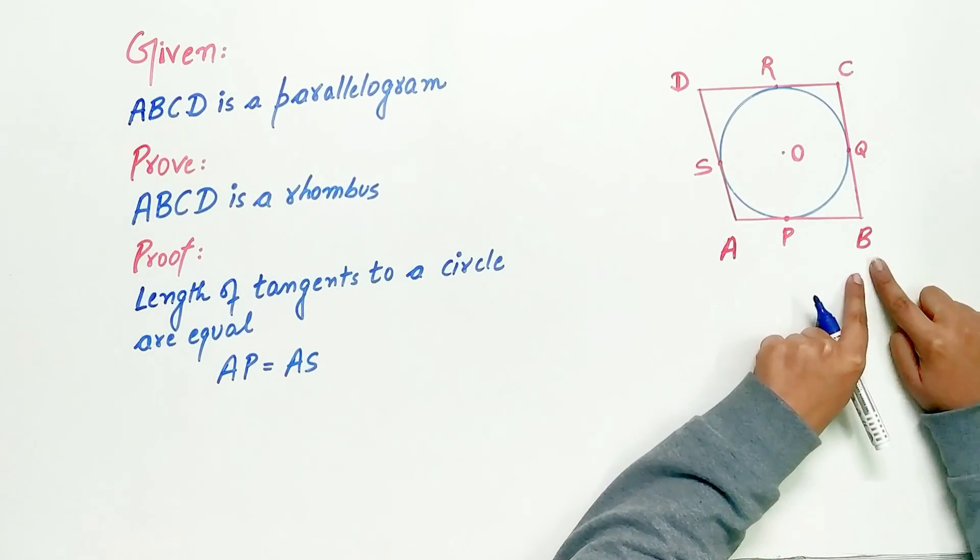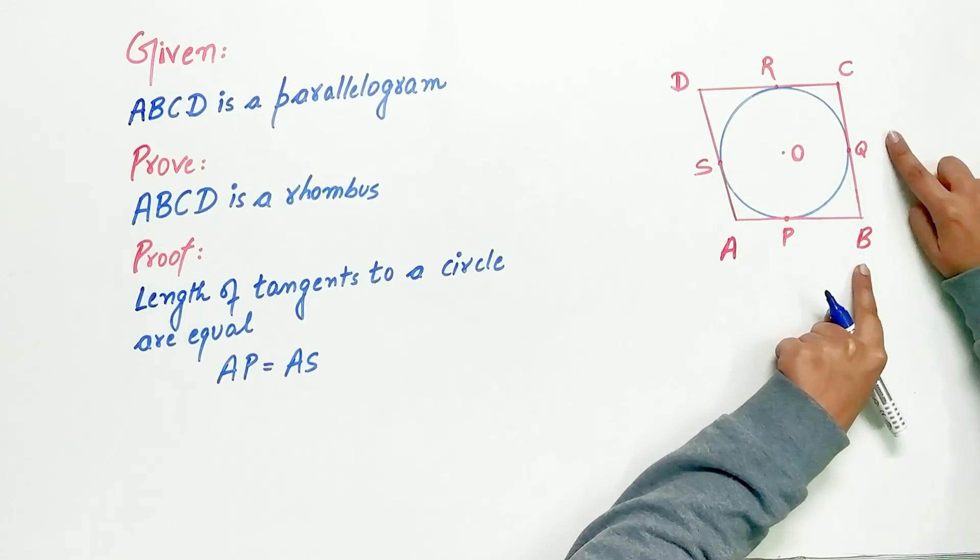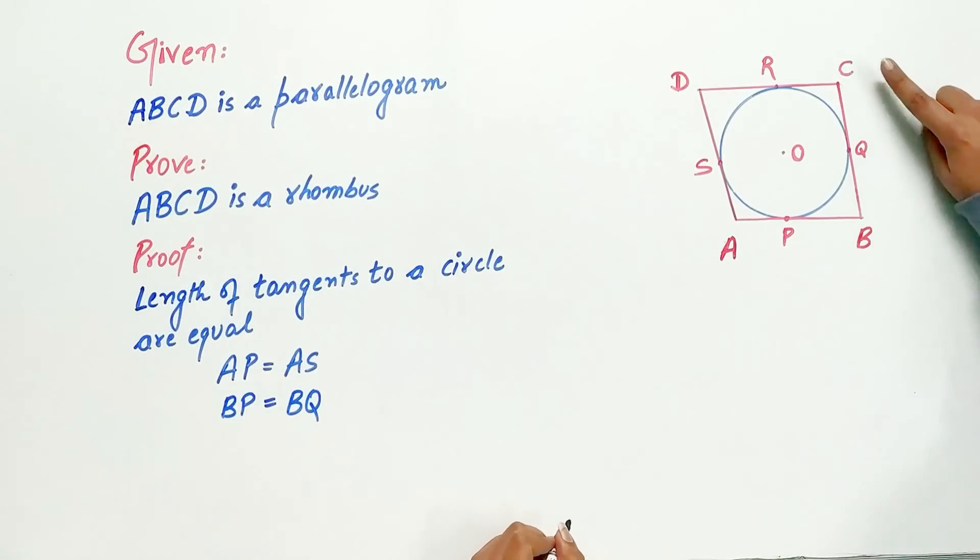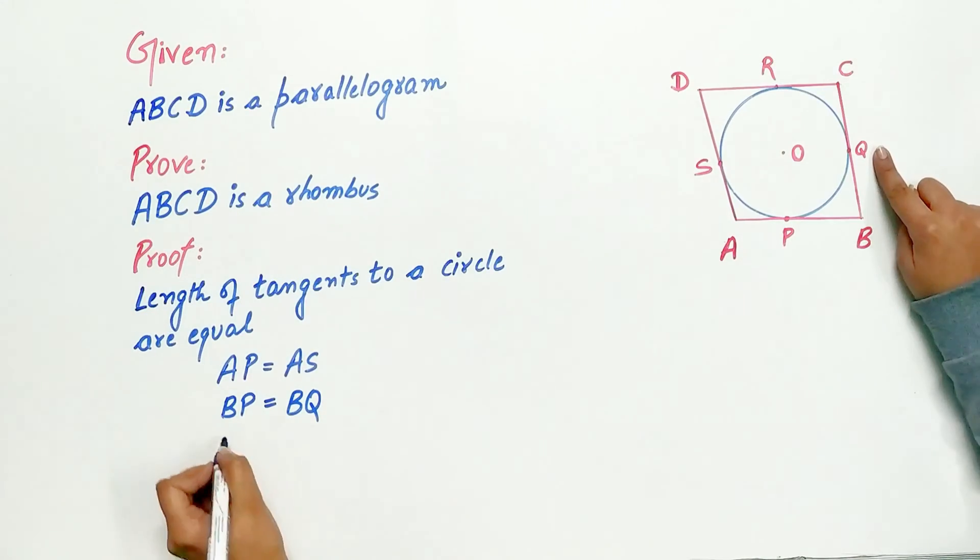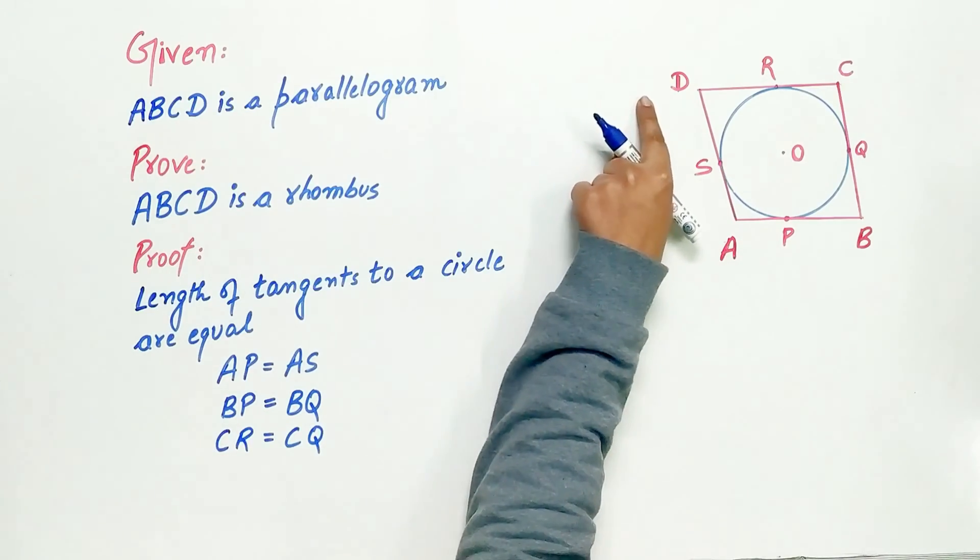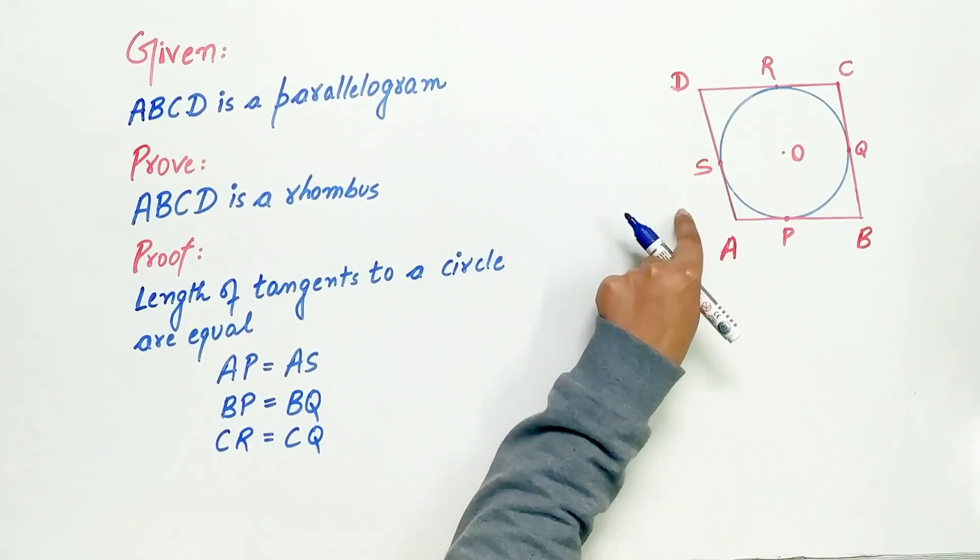Similarly, B is an external point. Hence, BP is equal to BQ. C is an external point. So by theorem 10.2, CR is equal to CQ. D is also an external point. Hence, DR is equal to DS.